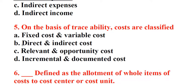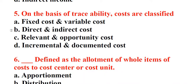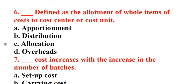Question 5: On the basis of traceability, costs are classified as. A. Fixed cost and variable cost, B. Direct and indirect cost, C. Relevant and opportunity cost, D. Incremental and sunk cost. Answer: B. Direct and indirect cost. Question 6: Underscore is defined as the allotment of whole items of costs to cost center or cost unit. A. Apportionment, B. Distribution, C. Allocation, D. Overheads. Answer: C. Allocation.